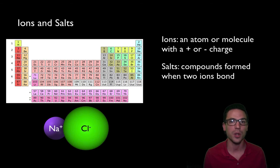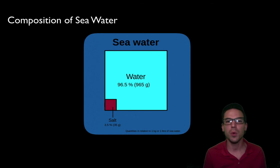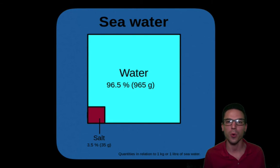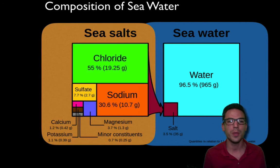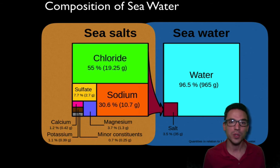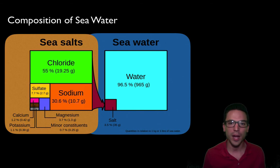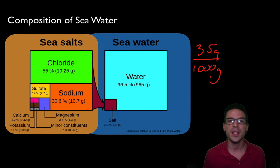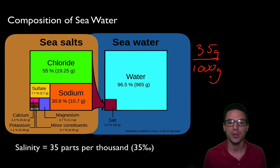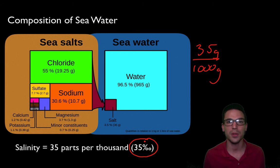Anytime two ions bond together because of that positive and negative charge they form what's known as a salt. Sodium chloride is a salt you're probably very familiar with. About 96.5% of seawater is just water (H₂O), and the other 3.5% is made up of various salts or ions — sodium chloride, sulfate, calcium, potassium, magnesium. Because about 35 grams of salts are found in 1,000 grams of seawater, we say the salinity of seawater is typically about 35 parts per thousand.